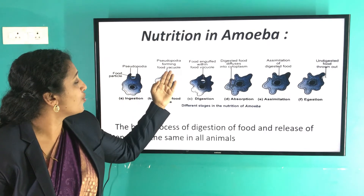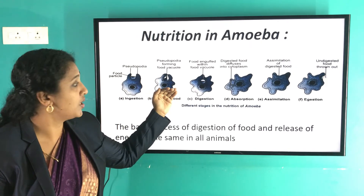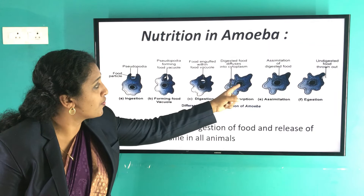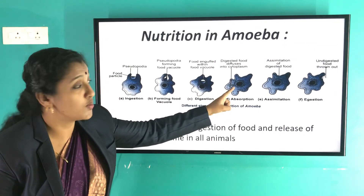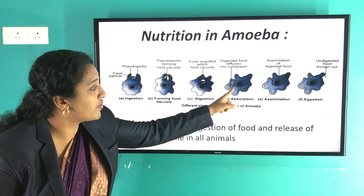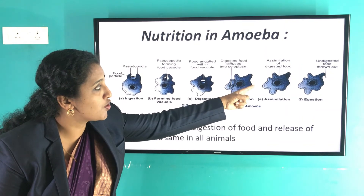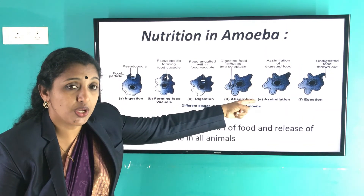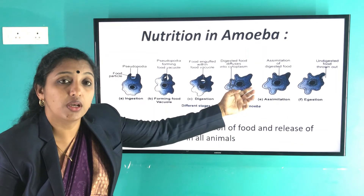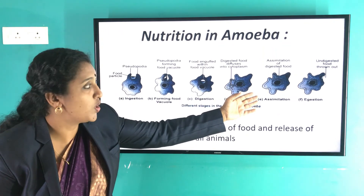In the second stage, the pseudopodia completely enclose and trap the food inside a food vacuole. The food vacuole secretes digestive juices that help digest the food materials present inside it. After digestion, the nutrients are absorbed into the cell, and then assimilation occurs — the absorbed nutrients are used for reproduction, movement, and other life processes.